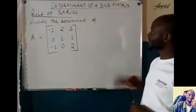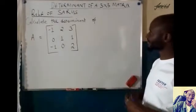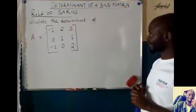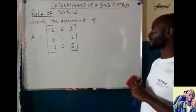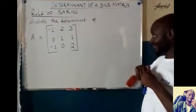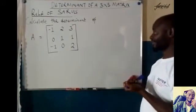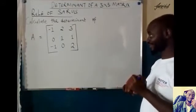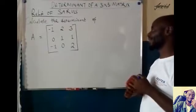In this video, I want to show how we can determine the determinant of a 3x3 matrix, and we are going to use the rule of Sarrus. So the question is calculate the determinant of A with those entries. You can see it's a square 3x3 matrix.